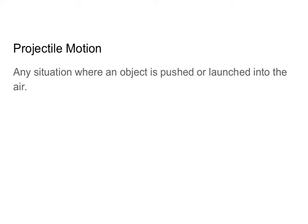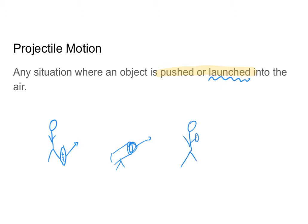Projectile motion, again from our previous video, is any situation where an object is pushed or launched into the air, and in this video we're going to be really focusing on that launched part of it. We're looking at situations such as a football player throwing a football into the air, a cannon launching a cannonball, or somebody with a t-shirt launcher launching a t-shirt into a crowd at a basketball game. In all these situations our objects have both an initial velocity in the x direction and an initial velocity in the y direction.